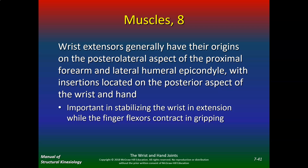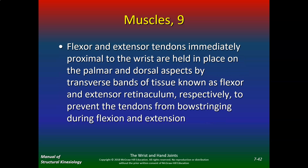Wrist extensors generally have their origins on the posterior lateral aspect of the proximal forearm and lateral humeral epicondyle, with insertions on the posterior aspect of the wrist and hand. They are important for stabilizing the wrist in extension while finger flexors contract. Flexor and extensor tendons proximal to the wrist are held in place by transverse bands known as the flexor and extensor retinaculum, preventing the tendons from bowstringing.